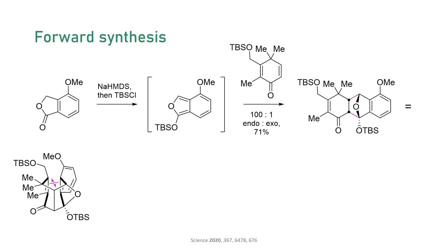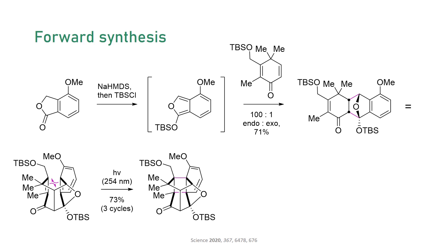The 2+2 addition proceeded in around 50% yield with incomplete conversion of starting material. The authors usually re-subjected the re-isolated starting material to the photo conditions, bringing the overall yield over three cycles to around 70%. In just two steps, the team already forged the 4-4-2-propellane, all four quaternary stereocenters of the cyclobutane, and the dearomatized B-ring. Based on this initial trajectory, you would think that they might complete the synthesis in just five more steps — but of course, things aren't always this straightforward.